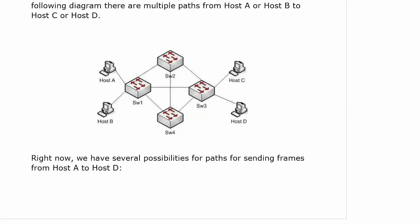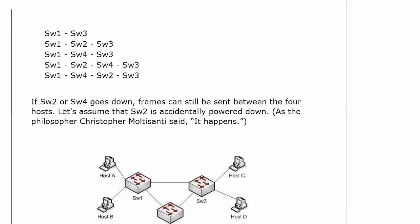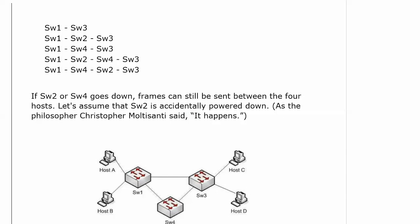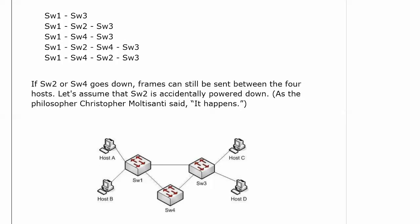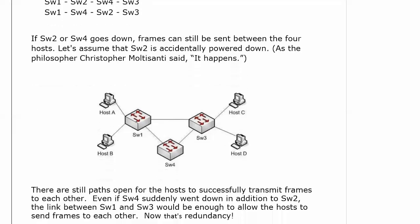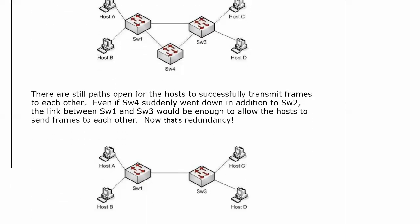Right now we've got several possibilities just to go from A to D — five different paths. So if Switch 2 or Switch 4 goes down, our center-of-network switches, frames could still be sent between the four hosts. Let's assume Switch 2 is accidentally powered down — stuff happens. If that one's removed, these four hosts can still send data to each other, no problem. And even if Switch 4 went down in addition to Switch 2, the link between Switch 1 and Switch 3 would still allow hosts to send frames. That's a lot of redundancy.